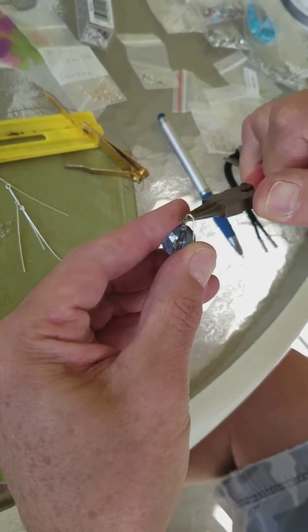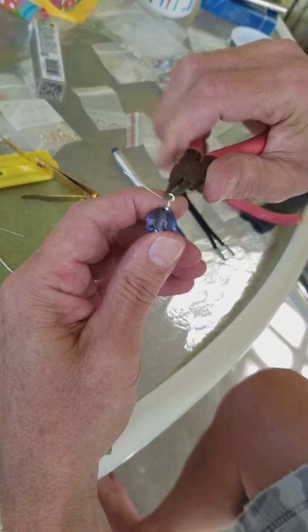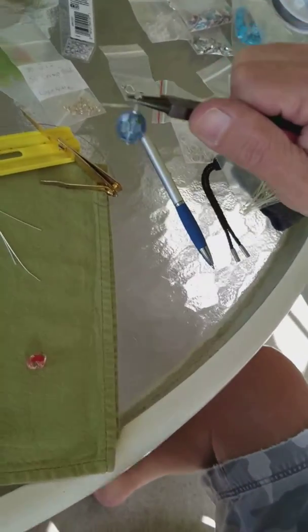Bring it around, flip your pliers up, come underneath, and you've made your loop. Come around, hold your loop with the flat nose, with the round nose pliers.